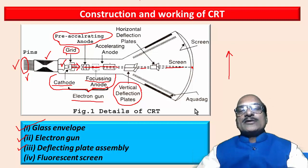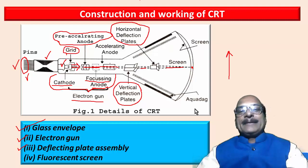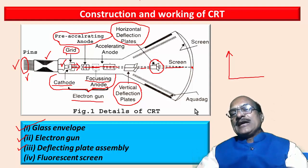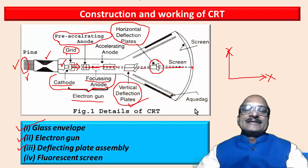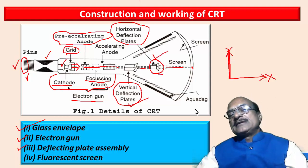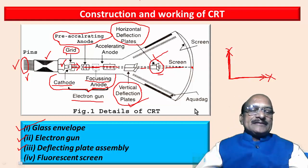Similarly, there is another set called horizontal deflection plates. If we apply the potential difference between these plates, the electron beam will be deflected along the X axis. So if we apply the potential difference to the vertical deflecting plates, the electron beam deflects along the Y axis, and if we apply it to the horizontal deflecting plates, the electron beam deflects in the horizontal plane.